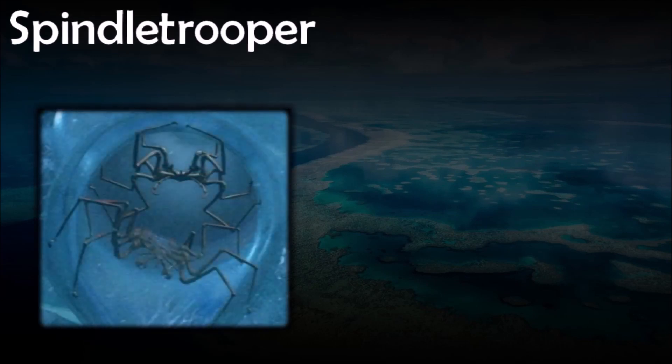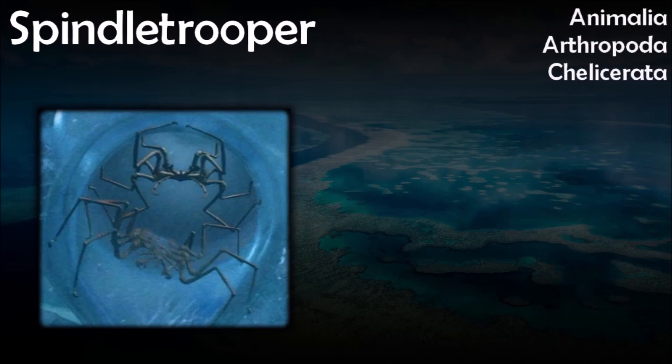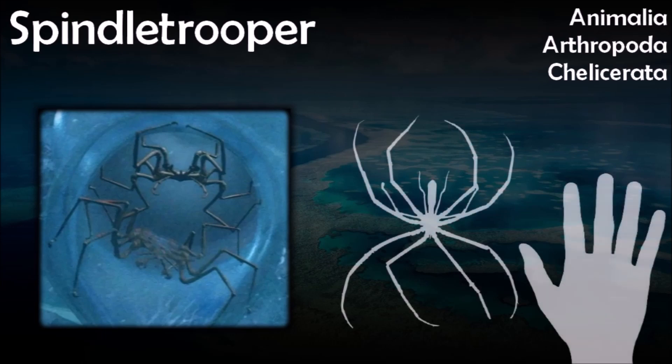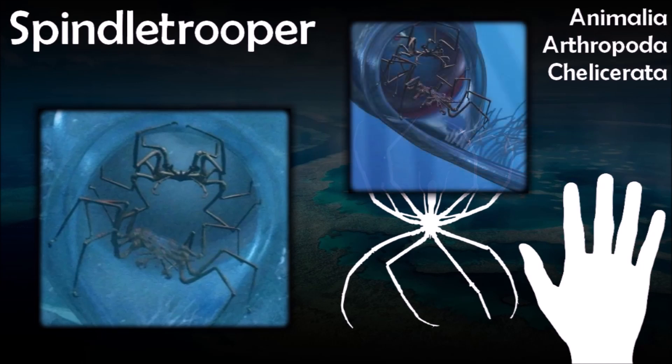The ocean phantom conceals a secret weapon inside specially adapted tentacles. In return for food and shelter, an army of vicious spindle troopers is on hand to defend the phantom from other predators. The spindle trooper is a species of highly specialized sea spider native to the shallow seas of 100 million AD. It has a symbiotic relationship with the ocean phantoms, which provides small armies of spindle troopers with shelter and food in exchange for defense. A single phantom can have as many as 12 or so spindle troopers living among the tentacles, some of which have morphed into capsules similar in shape to bladderwort plants.